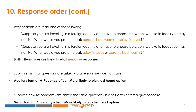Consider a different version of the same issue. Respondents were asked to choose between two exotic, unpleasant foods — 'caramelized worms or spicy fish eyes' versus 'spicy fish eyes or caramelized worms.' Both alternatives are likely to elicit negative responses, illustrating that response order effects apply regardless of whether options are positive or negative.